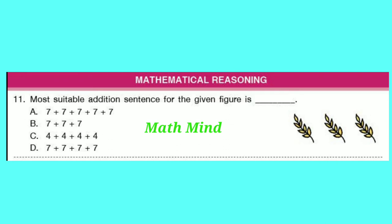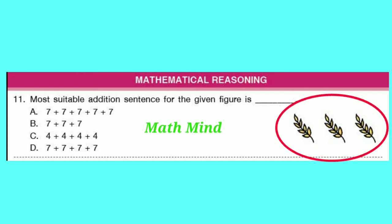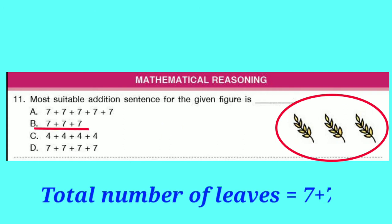Mathematical Reasoning. Question number 11: The most suitable addition sentence for the given figure is dash. There are 7 leaves in each stem, and there are 3 stems. All are similar. So adding 7 three times, we get 7 plus 7 plus 7. Option B is correct.